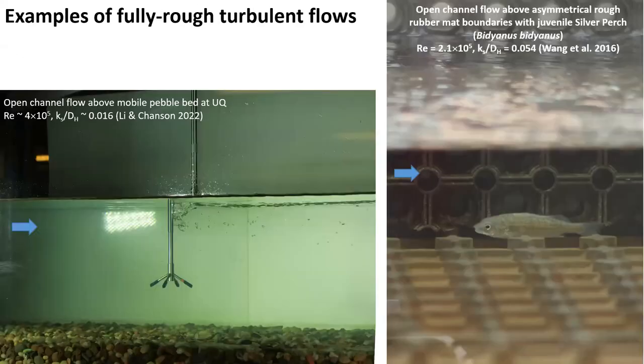Examples of fully rough turbulent flow are this channel on the left with natural river pebbles, and on the right, these open channels with artificial roughness introduced to facilitate upstream fish passage in culverts.